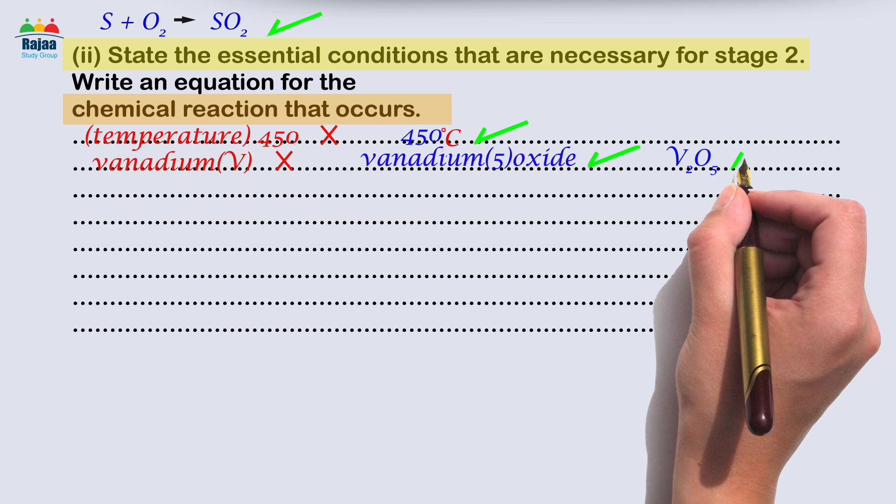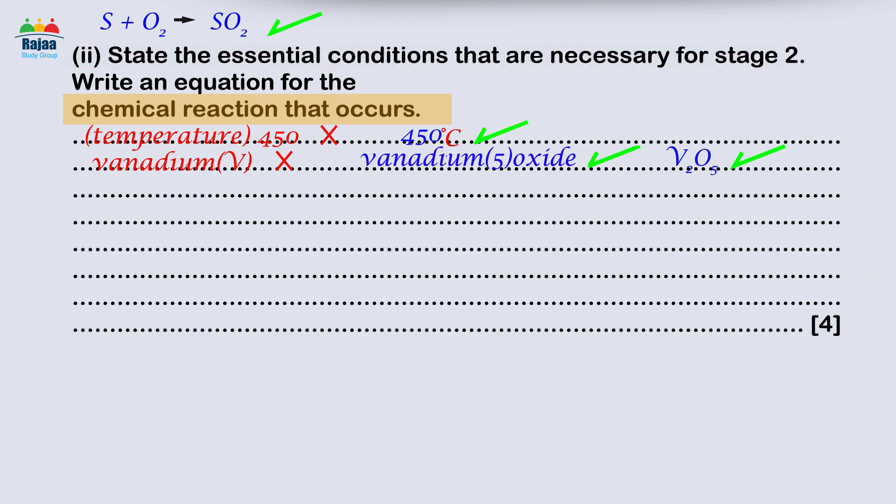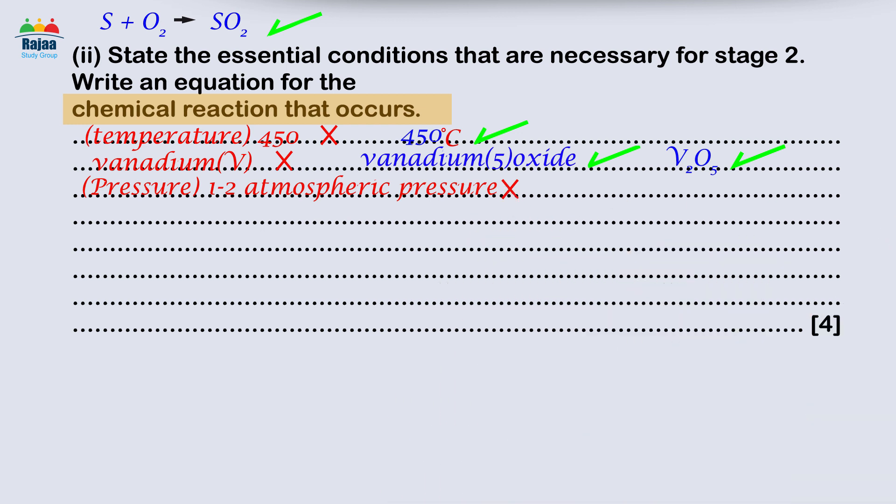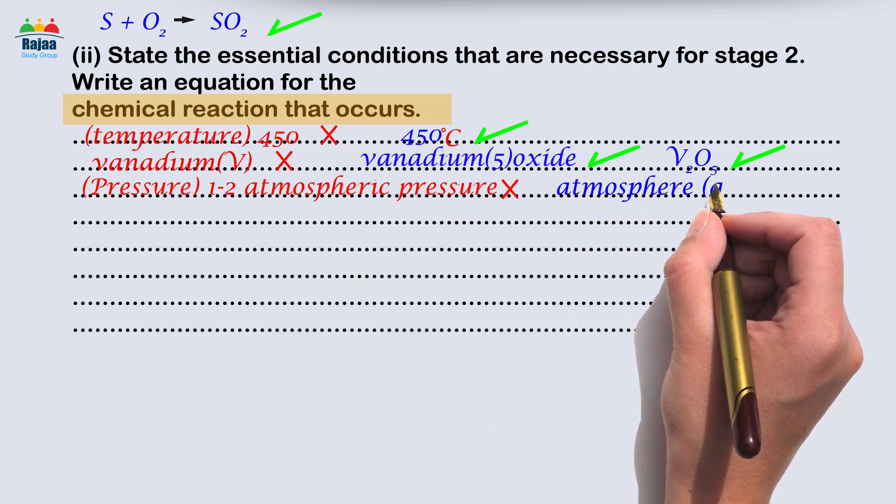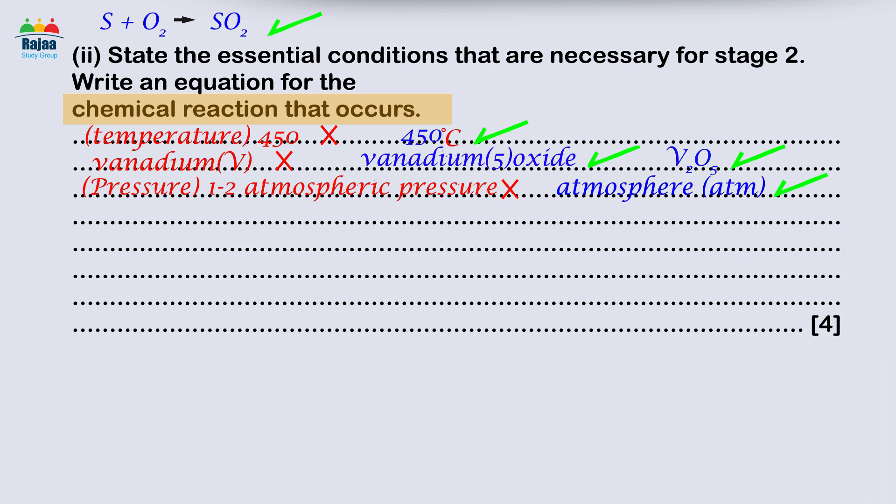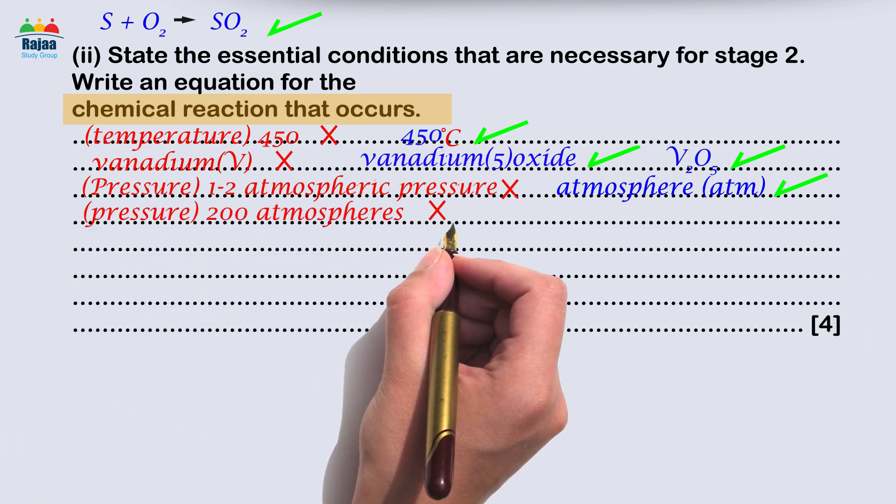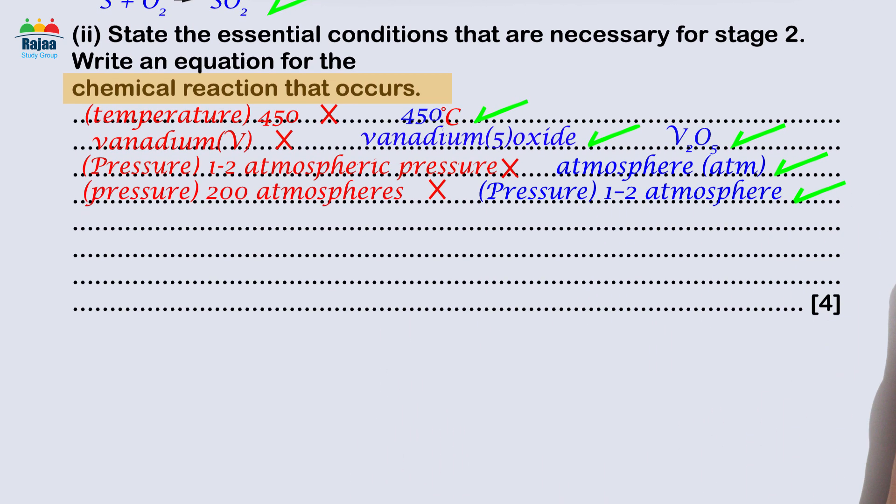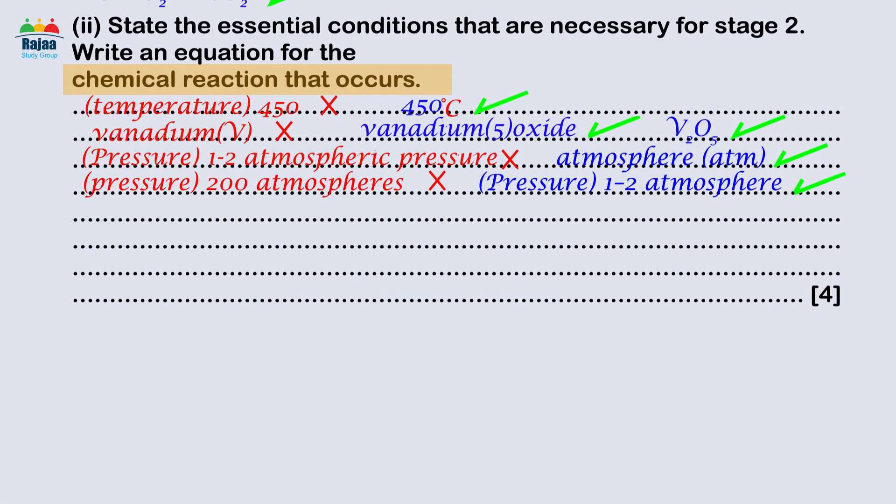Pressure: one to two atmospheric pressure - no, this was a common mistake because atmospheric pressure is the pressure within Earth's atmosphere and the unit of pressure in this case was an atmosphere (atm). Pressure 200 atmospheres - no, this was also a common error that demonstrated confusion with the Haber process.